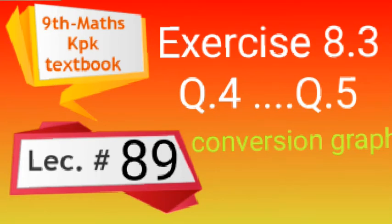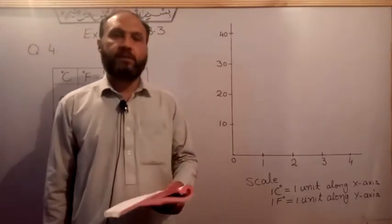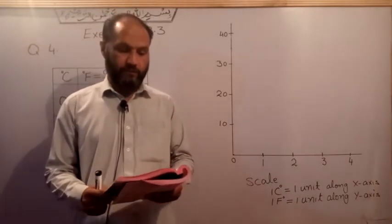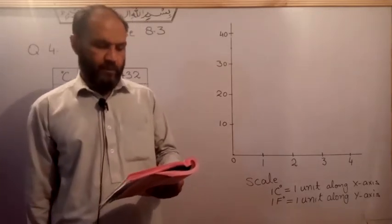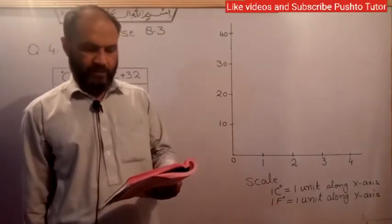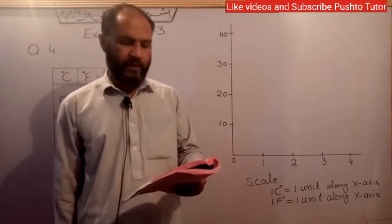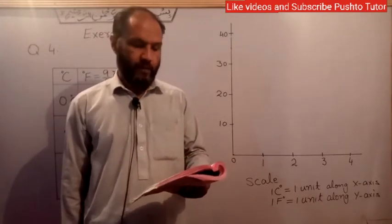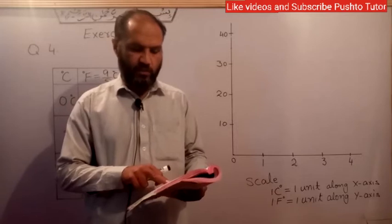Bismillahirrahmanirrahim. I am going to lecture 9th class maths, Exercise 8.3, Question number 4. Convert the following temperatures given in Celsius degrees into Fahrenheit and then draw its graph. The Celsius temperatures are 0, 2, and 3.